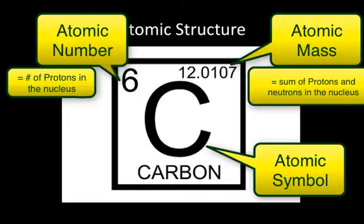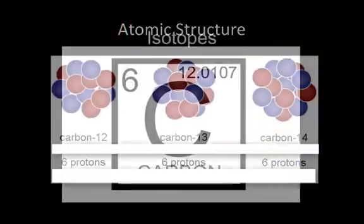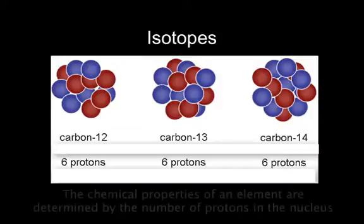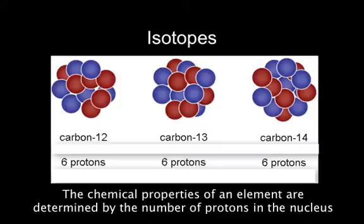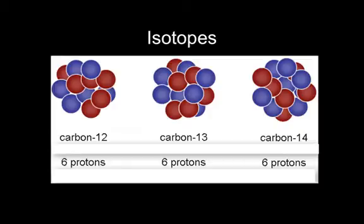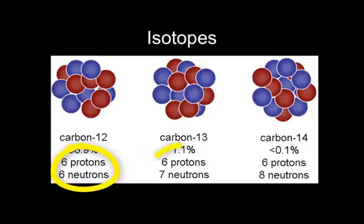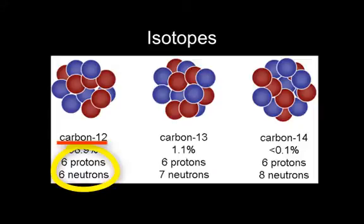The units are in atomic mass units. Now, all carbon atoms have six protons. The chemical properties of an element are determined by the number of protons in the nucleus, but not every atom of every element has an equal number of neutrons. For example, most carbon atoms — almost 99 percent — do have six protons and six neutrons; however, some have seven or even eight neutrons.